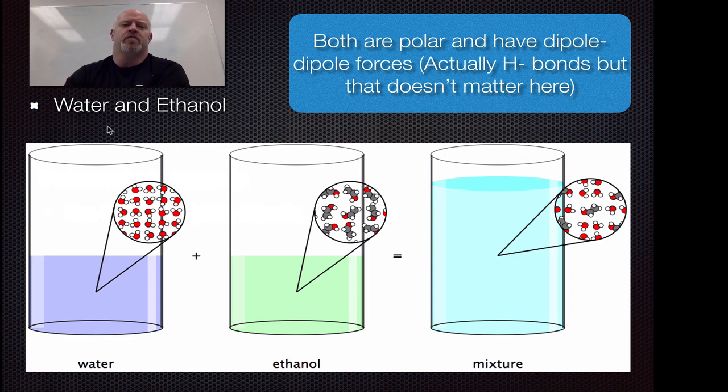First, what happens when we put water and ethanol together? To determine if they'll mix, we need to look at their polarity and IMF. Both are polar molecules with dipole-dipole forces - actually both have hydrogen bonding, but for solubility purposes they're classified the same. Because they both have dipole-dipole forces, they should mix together.